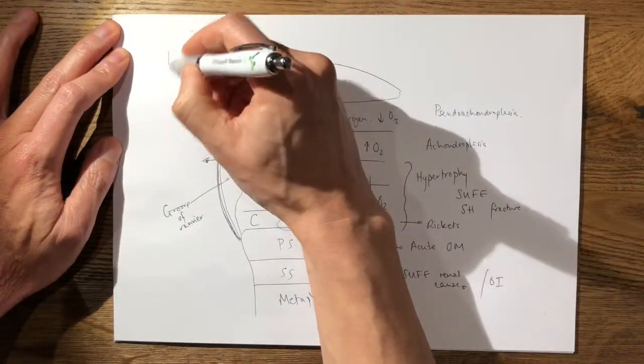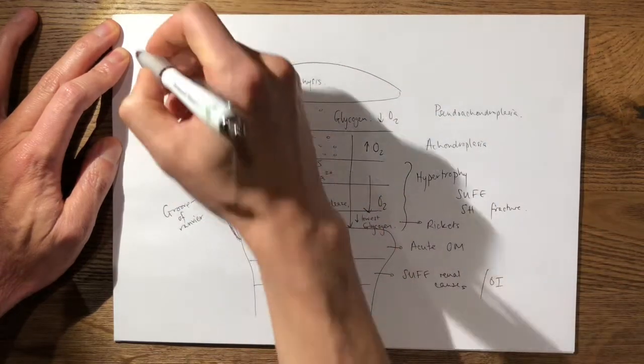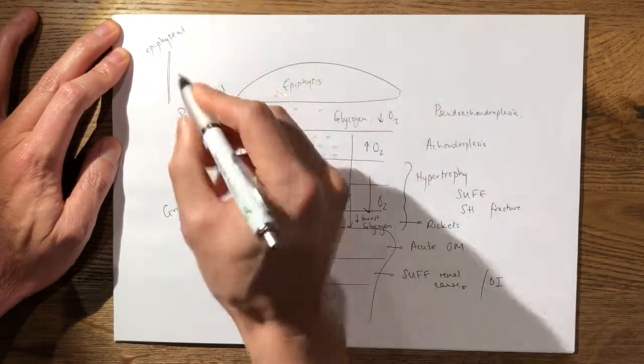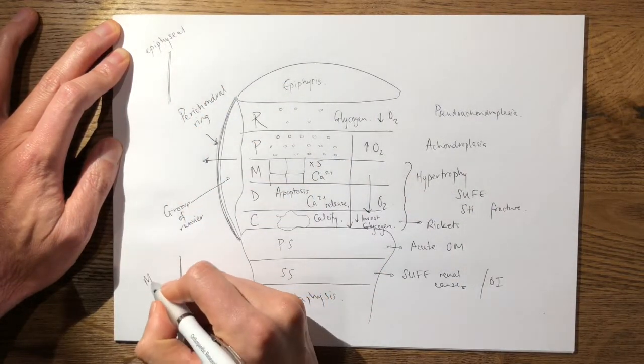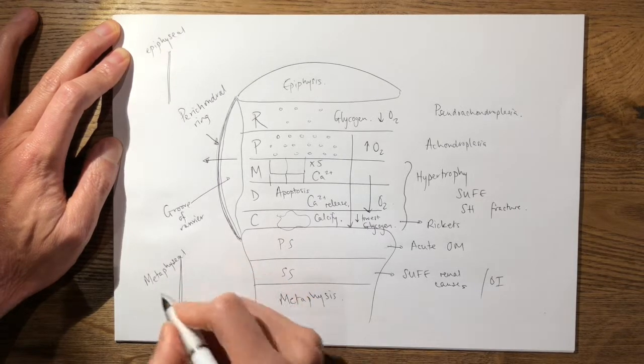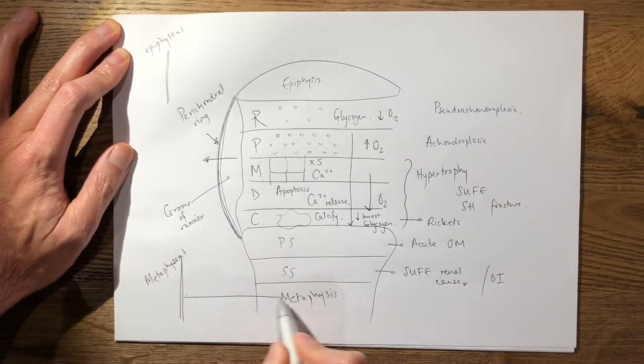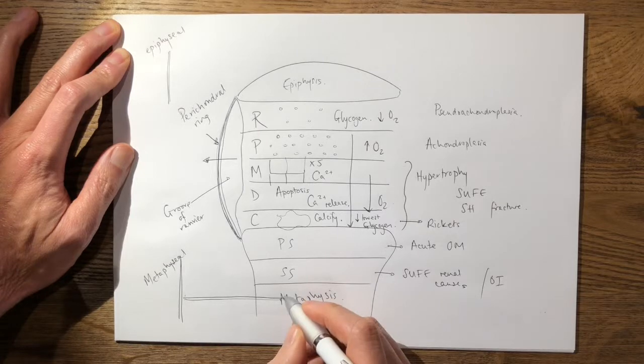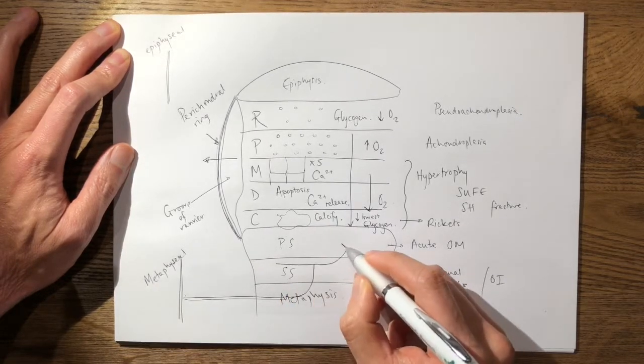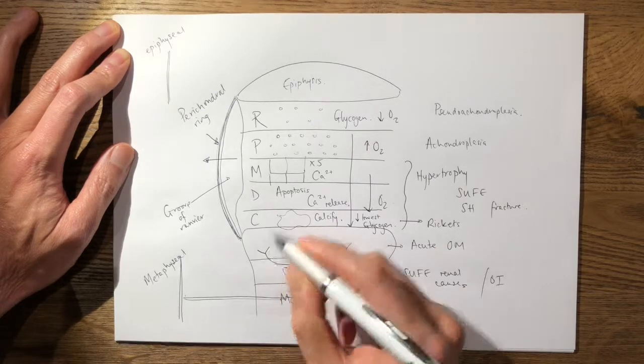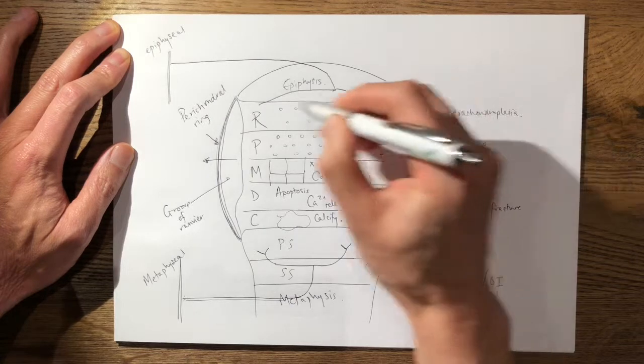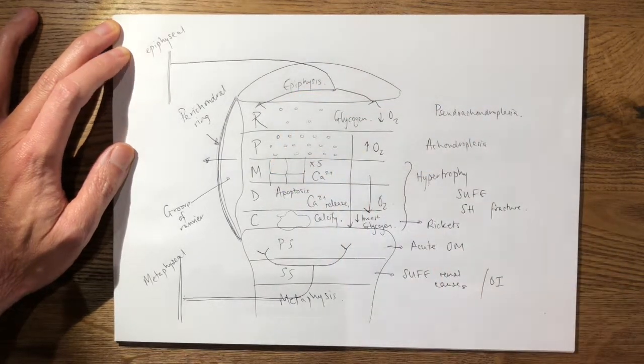It's also important to note the blood supply. So you have the epiphyseal blood supply at the top and you have the metaphyseal blood supply at the bottom, and they give vessels into respectively the metaphysis coming from the bottom here and the epiphysis coming from the top. So that's important to note as well.